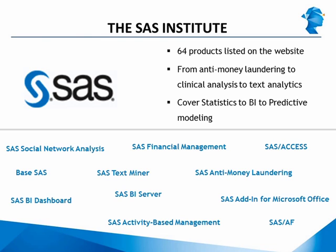From 1972 to now, it has been an incredible journey for SAS. As of 2011, SAS had more than 50,000 customer sites and 200 products. On this slide we have some examples of SAS products — they've got products for specific things like social network analysis, text miner, and BI server, as well as domain-specific tools like SAS Financial Management and SAS Anti-Money Laundering. Their solutions cover statistics, BI, and predictive modeling.